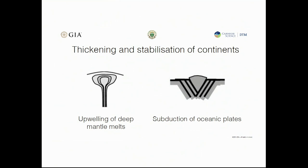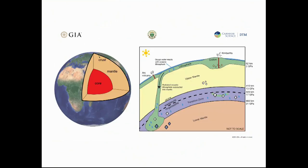The way these continents remain stable for more than 2.5 billion years is by having this thick cratonic root. It's really important to understand how these thick cratonic roots were in fact established and how they've remained stable over time. This is where diamonds come in. The majority of Earth's diamonds form in these cratonic areas, in the lithospheric keel below these really old cratons.